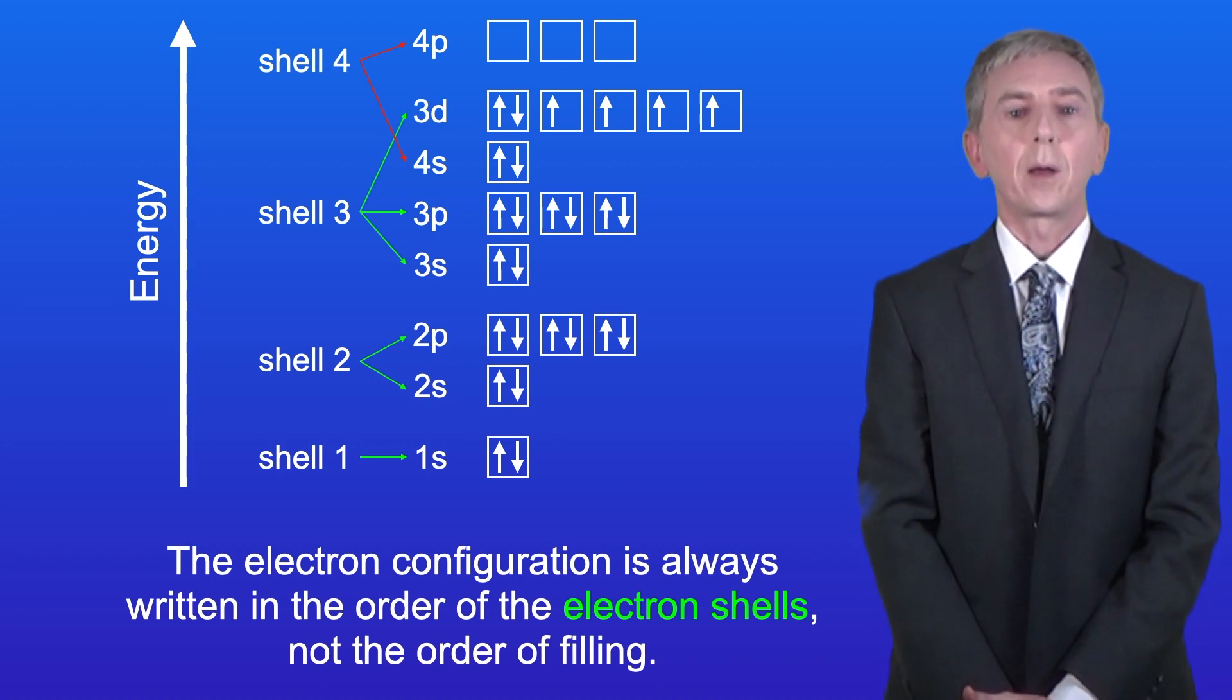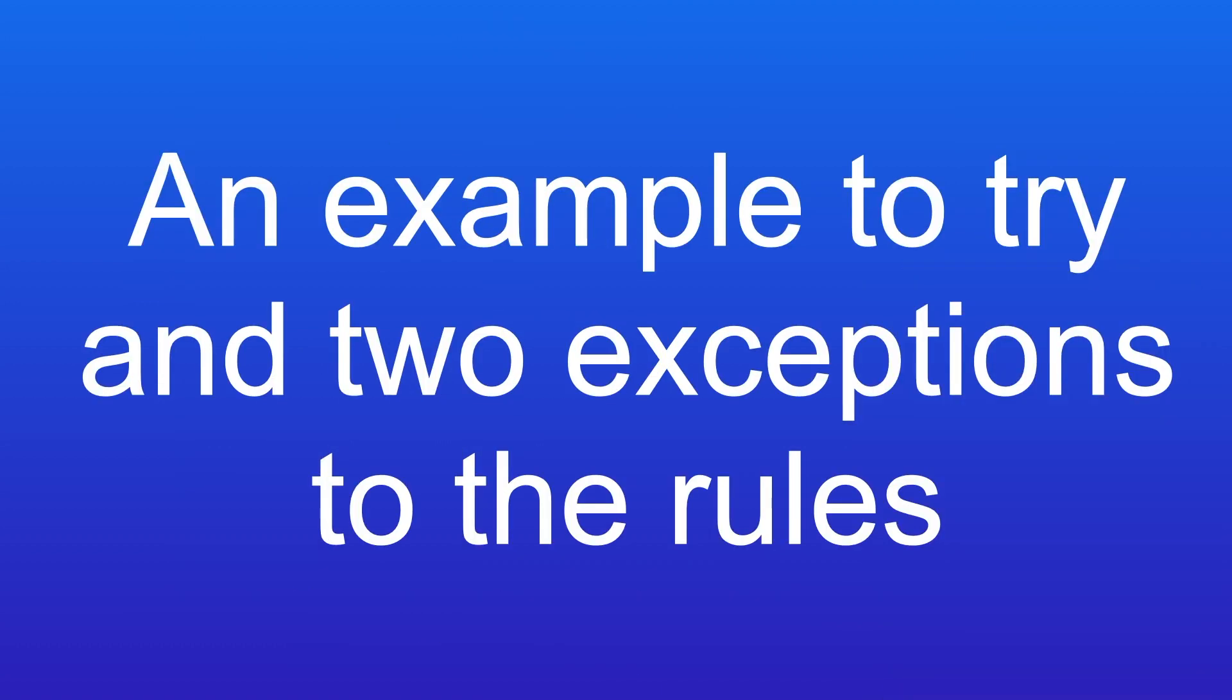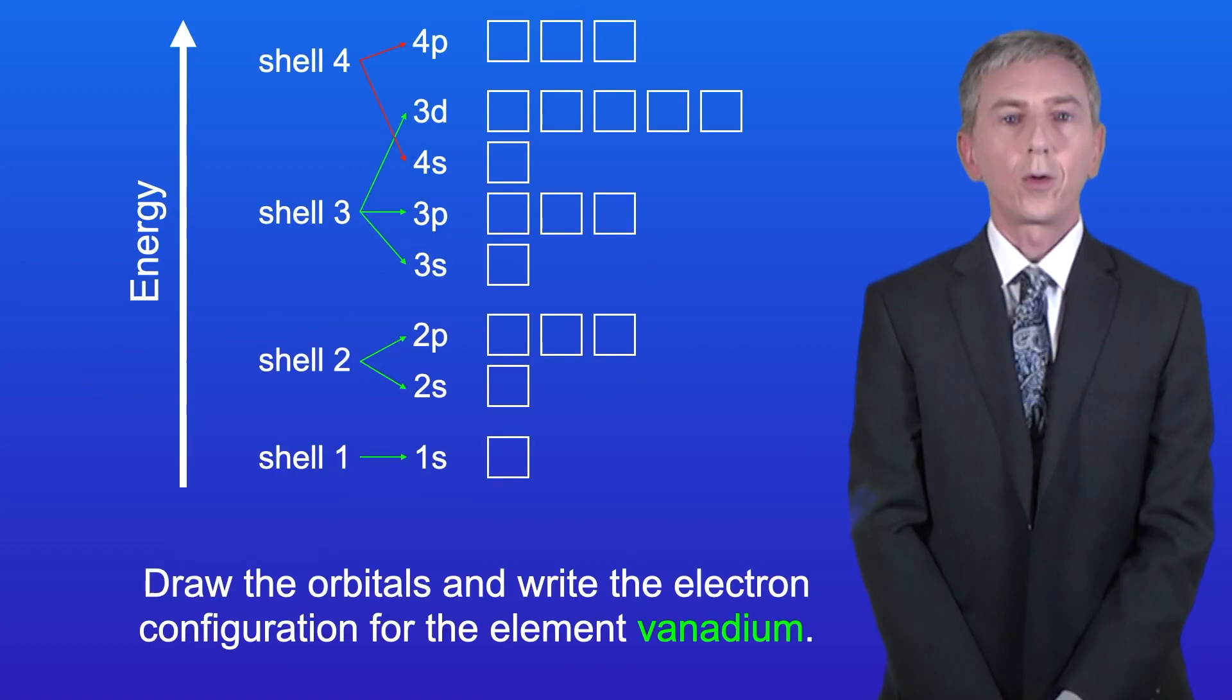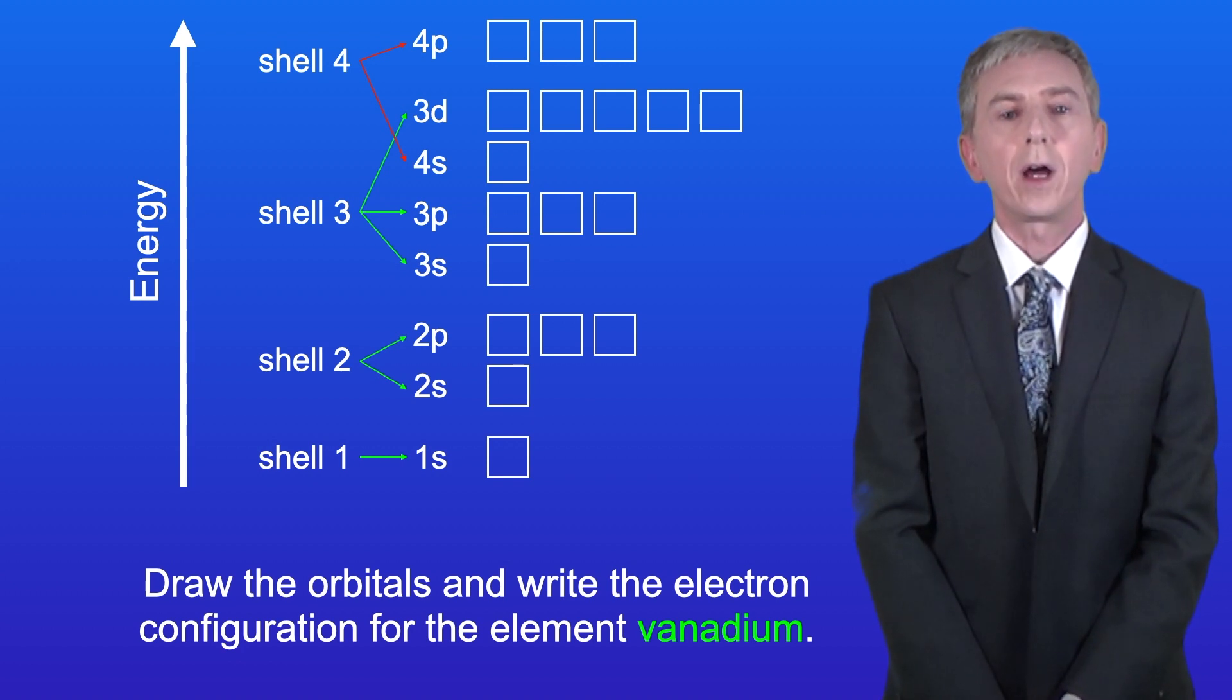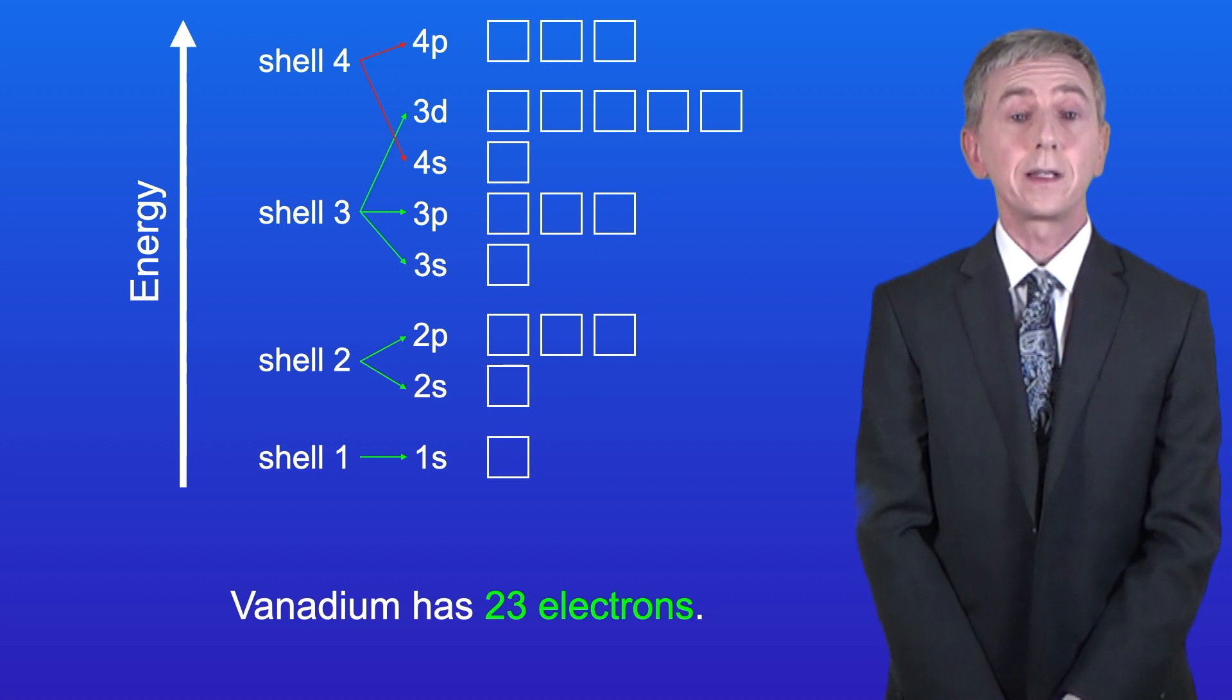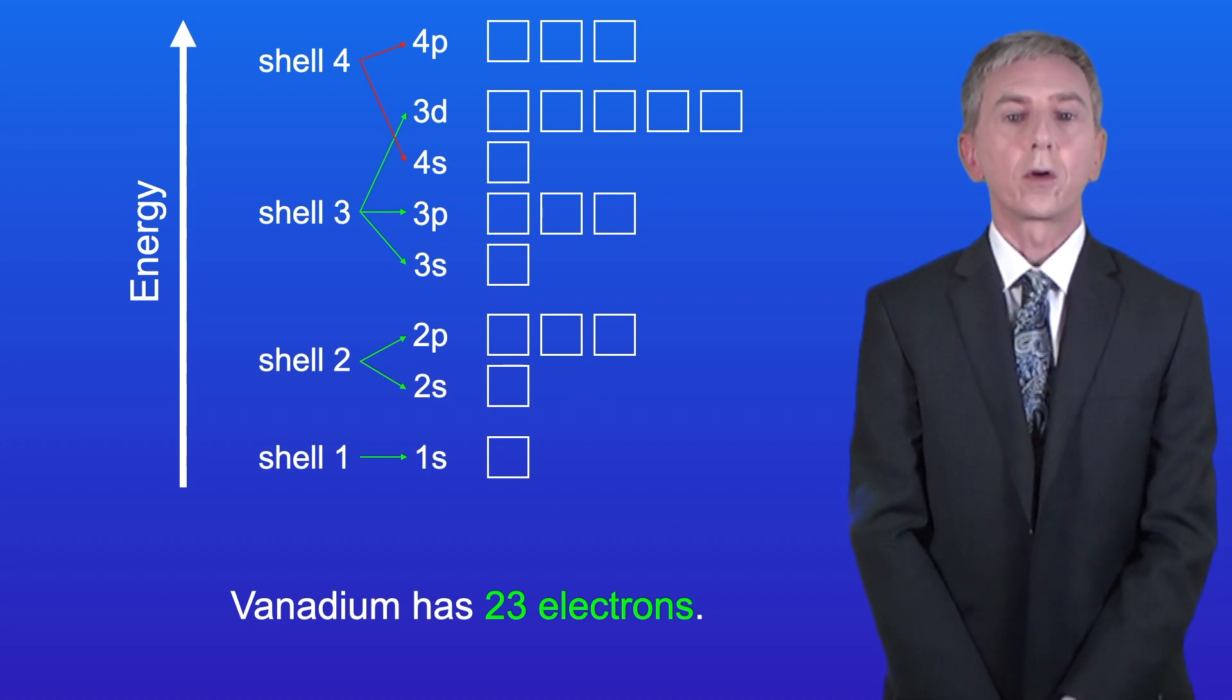Coming up I'll give you an example to try yourself. Okay, I'd like you to draw the orbitals and write the electron configuration for the element vanadium. Vanadium has 23 electrons, so pause the video and try this yourself.